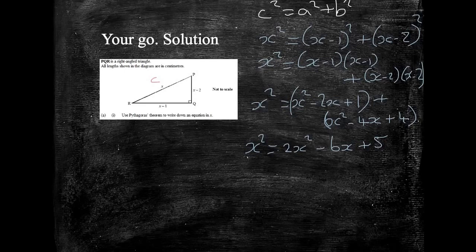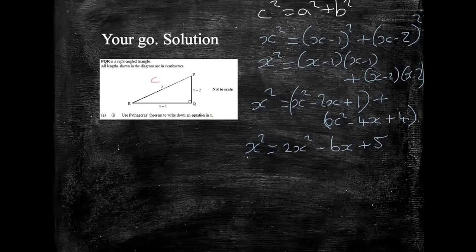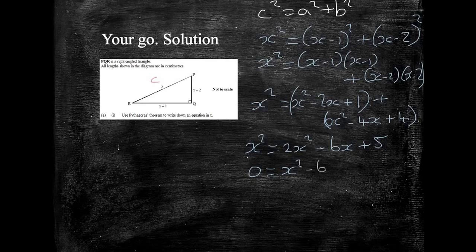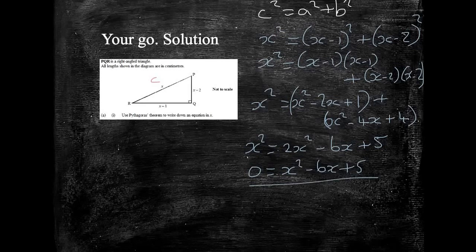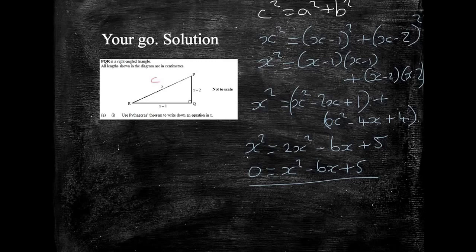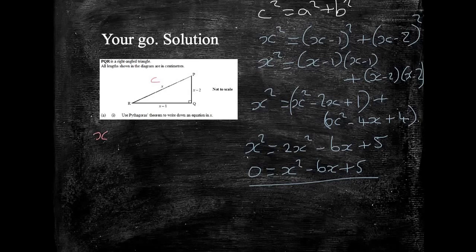And I can rearrange this now. I can take X squared from both sides, which gives me 0 equals X squared minus 6X plus 5, which is what it asked for in the first part of the question. It then went on to ask us to solve this.